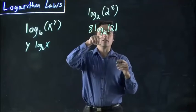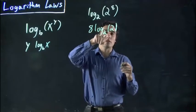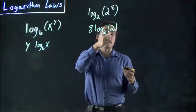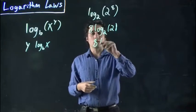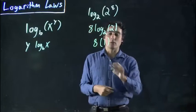And sure enough, log base 2 of 2, what does 2 have to be raised to to get 2? That's 1. So, that whole thing becomes 1. 8 times 1 is 8.